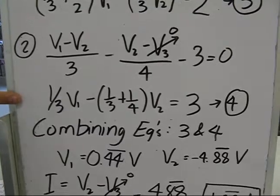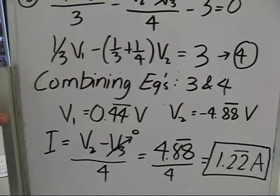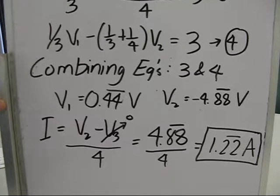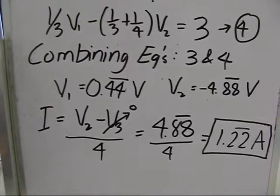Combining equations three and four, we get V1 equals 0.44 volts, and V2 equals negative 4.88 volts.